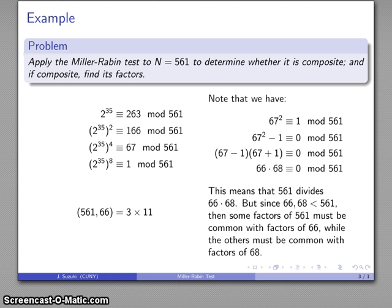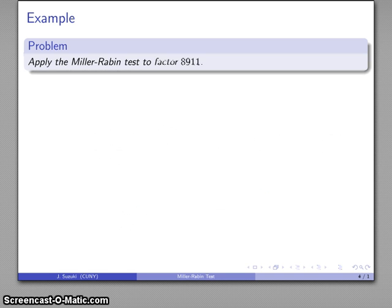Once I have two factors of 561, I can find the others by division. But I can also use the Euclidean algorithm and find that the greatest common divisor of 561 and 68 is 17. That gives me my factorization.